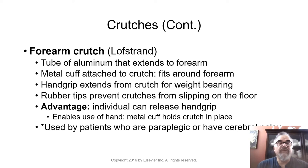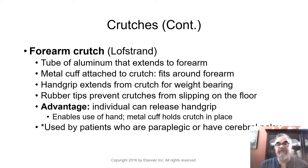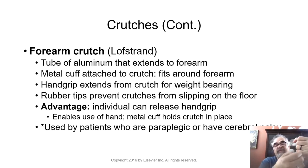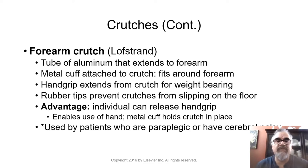Another type of crutch is the forearm crutch, also called a Lofstrand crutch. It is aluminum, extends to the forearm with a metal cuff attached to the arm, and then has a grip to hold below, with the cane going down to the floor. Many people who have cerebral palsy use these kinds of crutches. They have a hinge so the crutch can dangle off the forearm, allowing the user to let go of the grip and reach for items, then put their hands back in the grip. These are called forearm crutches as opposed to axillary crutches.